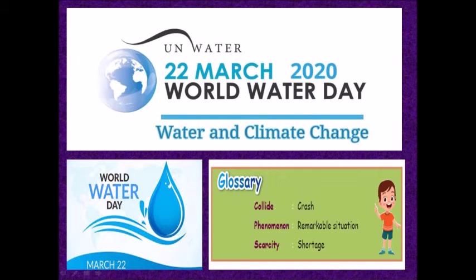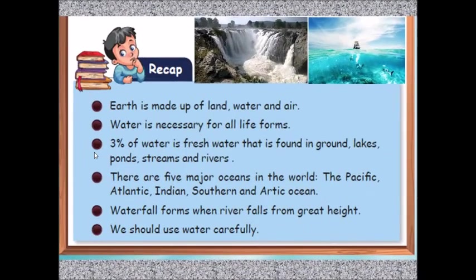Recap from your book: Earth is made up of land, water, and air. Water is necessary for all life forms — not only human beings, but plants and animals all need water for survival. Three percent of water is fresh water found in ground, lakes, ponds, streams, and rivers. There are five major oceans in the world: the Pacific, the Atlantic, Indian, Southern, and Arctic Ocean. A waterfall forms when a river falls from great height. We should use water very carefully.